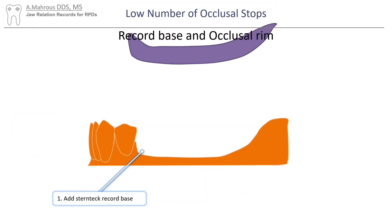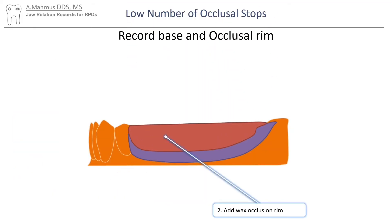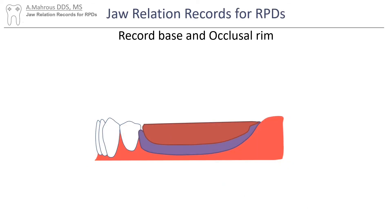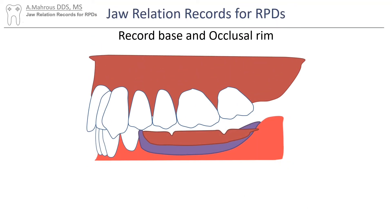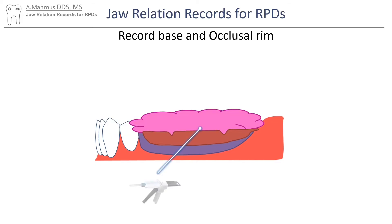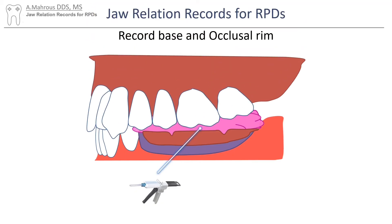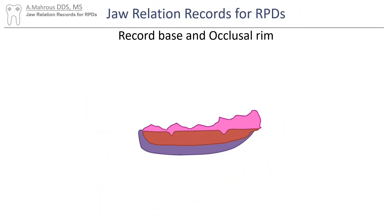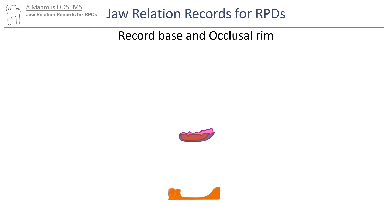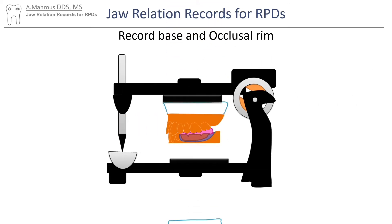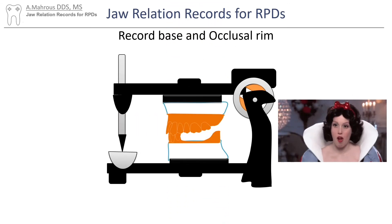Record bases are made on the diagnostic cast, and then a wax rim is made on top of that. They are both taken to the patient's mouth. The wax rim is then adjusted so that it does not interfere with the patient's occlusal stops. A bite registration material is used and the patient is instructed to bite down. After the bite registration material fully sets, the complex is removed and replaced back on the cast, where it can be used to remount the cast.